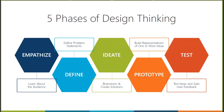We turn those problem statements into 'how might we' questions. We then move into the ideation phase where we're looking to brainstorm as many ideas as we can to solve for those questions. We narrow the scope down, plot our ideas out in the prioritization matrix, identify our stars and our risk-reward sweet spot, and then move into the prototype phase where we build quick representations of one or more of those ideas.